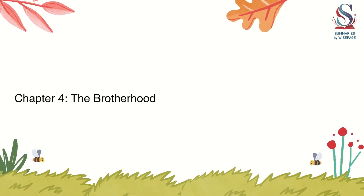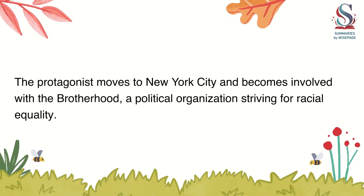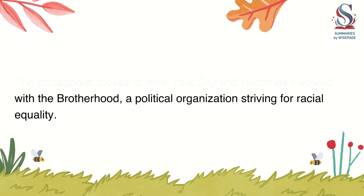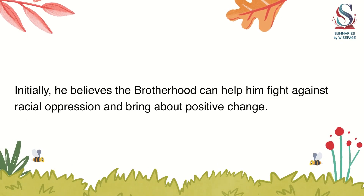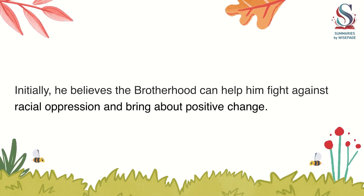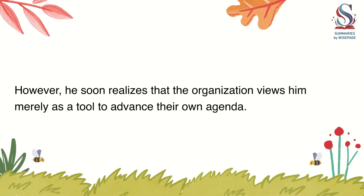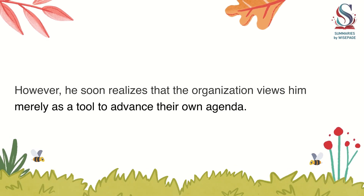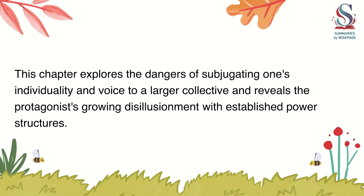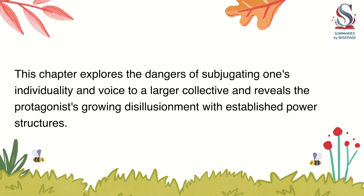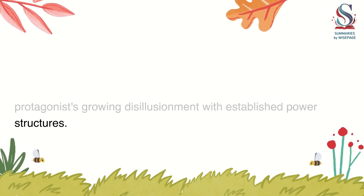Chapter 4: The Brotherhood. The protagonist moves to New York City and becomes involved with The Brotherhood, a political organization striving for racial equality. Initially, he believes The Brotherhood can help him fight against racial oppression and bring about positive change. However, he soon realizes that the organization views him merely as a tool to advance their own agenda. This chapter explores the dangers of subjugating one's individuality and voice to a larger collective and reveals the protagonist's growing disillusionment with established power structures.